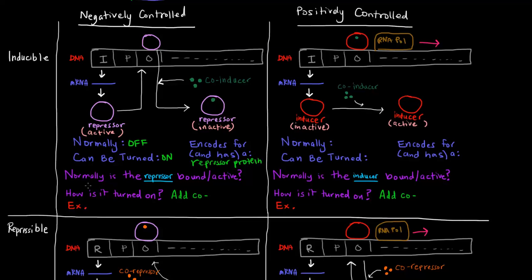Normally, is the repressor bound and active? Well, since the system is normally off, the repressor would be bound — yes. This system creates a repressor that is initially and normally active. It binds the operator and stops transcription.